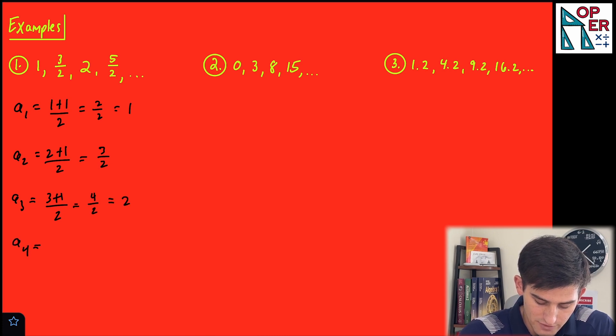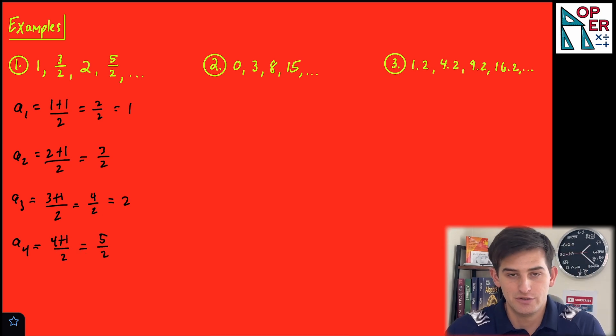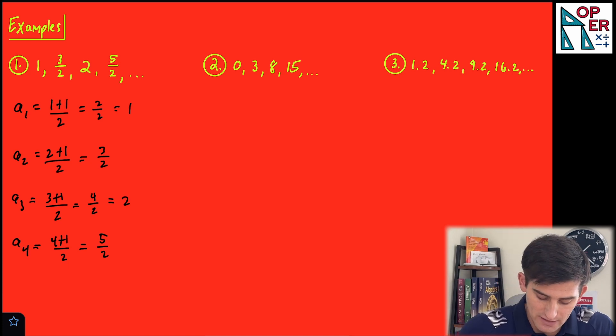And then for our fourth term, four plus one over two, which is equal to five over two. So look at what we are doing. We're taking n, or whatever position, whatever term we're trying to find. We're adding one, and then we're dividing by two.